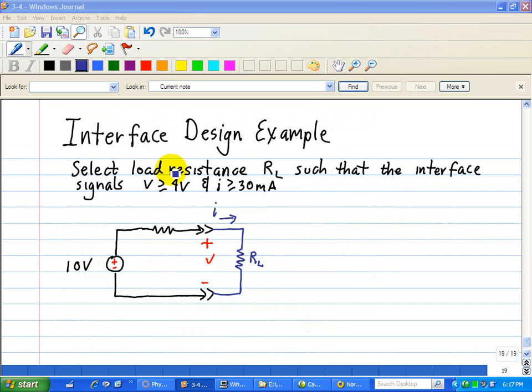Here, we are asked to select a load resistance RL such that the interface signals V and I, where V is greater than or equal to 4 volts, and I is greater than or equal to 30 milliamps.